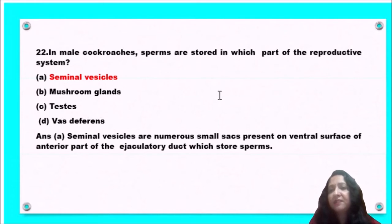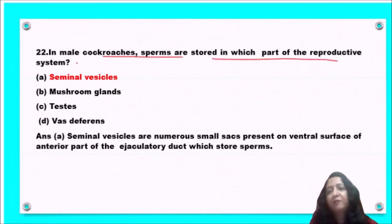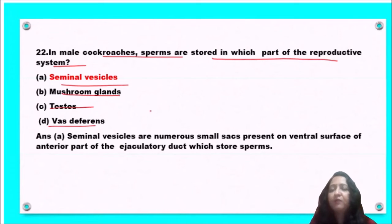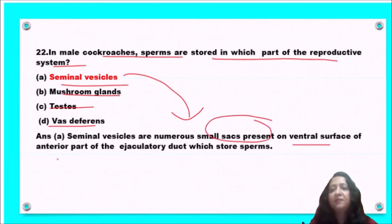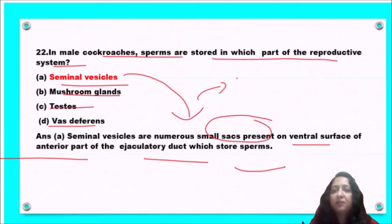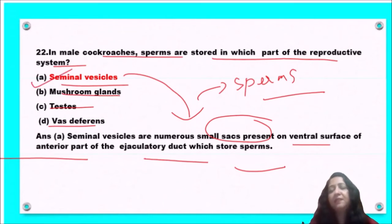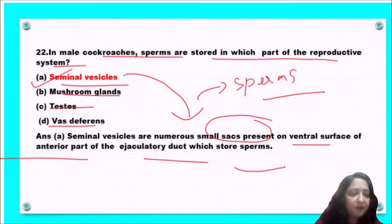Next question: in male cockroaches, sperms are stored in which part of the reproductive system — seminal vesicles, mushroom glands, testes, or vas deferens? Seminal vesicles are numerous small sacs present on the ventral surface of the anterior part of the ejaculatory duct, and they store the sperms. So option A, seminal vesicles, is the correct answer.